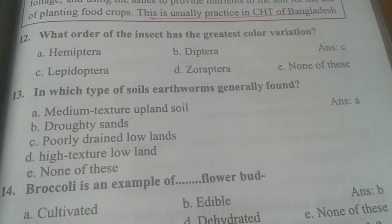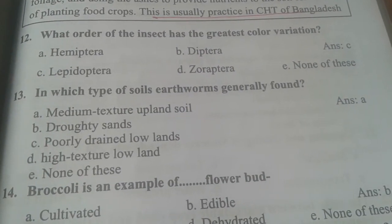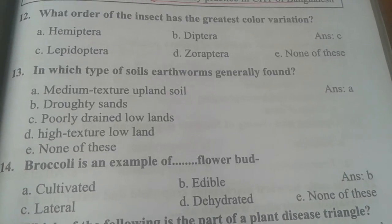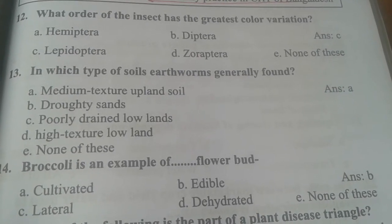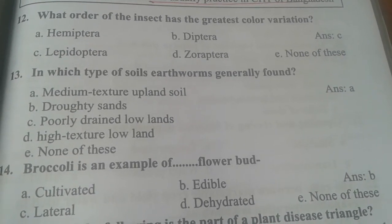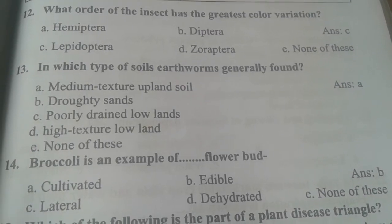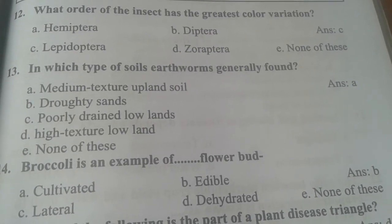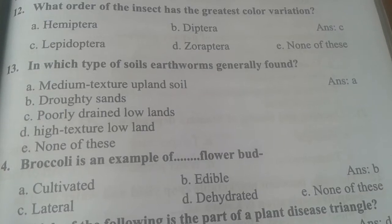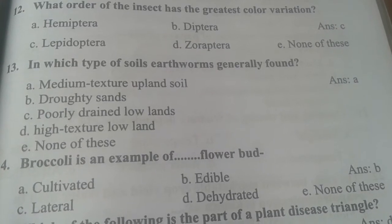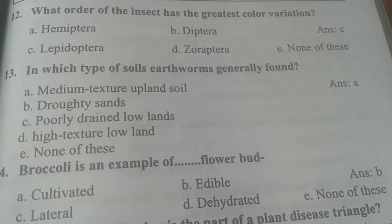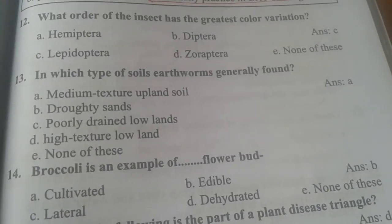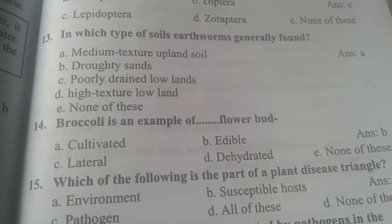In which type of soil are earthworms generally found? Earthworms are generally found in medium texture upland soil.